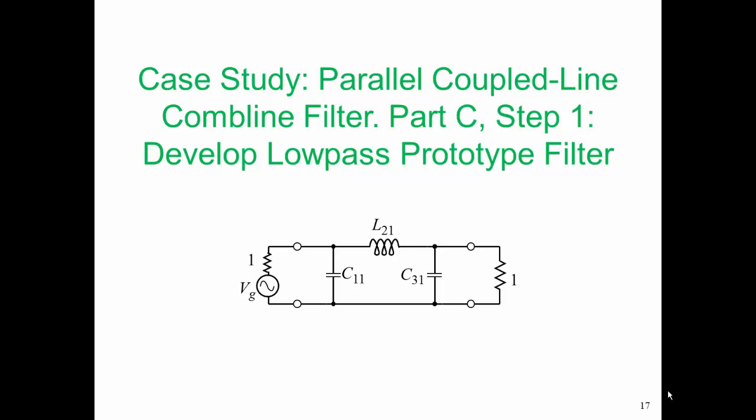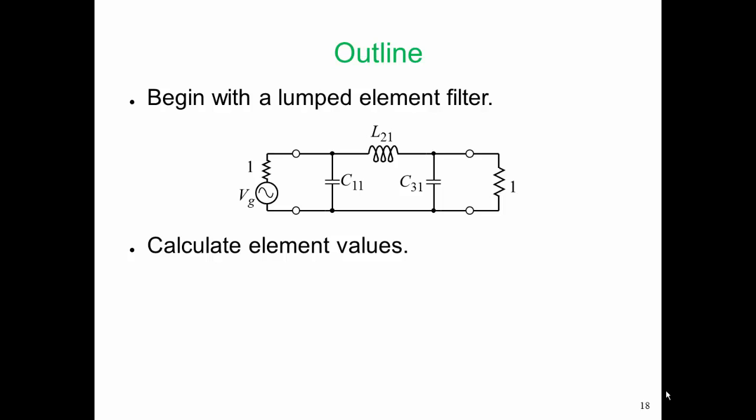We are ready to start the synthesis process, and this is step one, in which we're going to develop a low-pass prototype filter. So we're going to begin with a lumped element filter, and here we have a pi arrangement with two shunt capacitors and one series inductor, and we're going to calculate the element values.